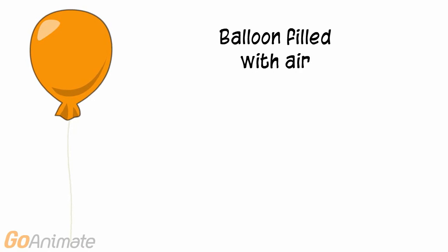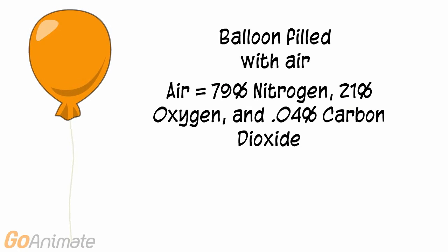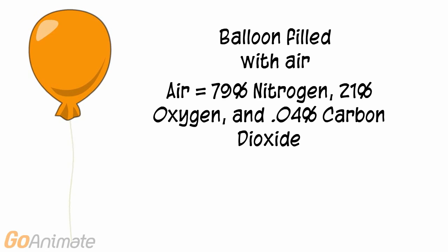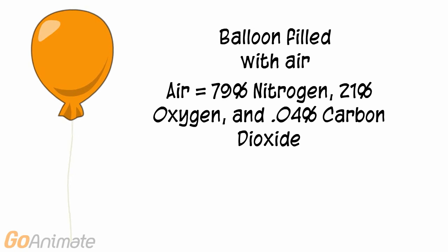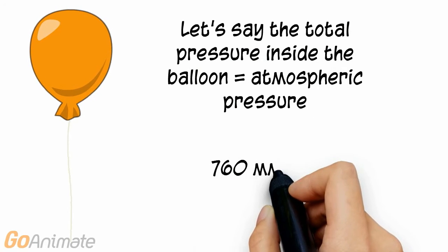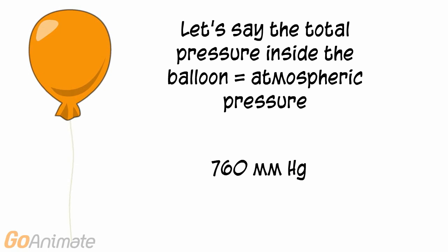We can use a balloon to illustrate Dalton's Law. The balloon is filled with air, which is a mixture of gases including about 79% nitrogen, 21% oxygen, and 0.04% carbon dioxide, along with some trace amounts of other gases. Let's say the total pressure inside the balloon equals atmospheric pressure, which is about 760 mmHg.